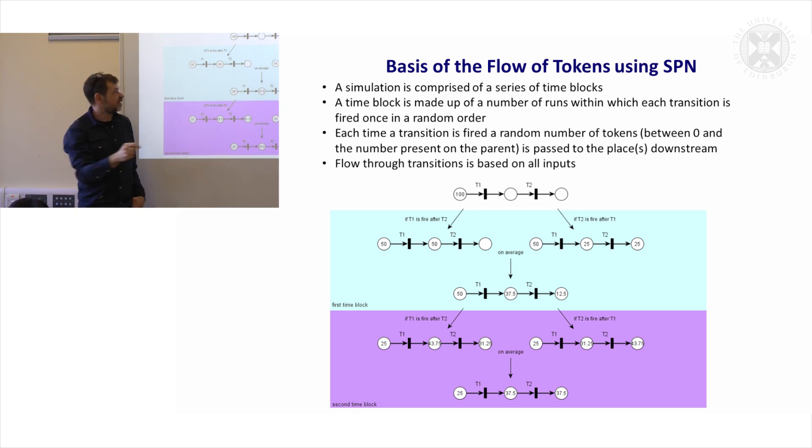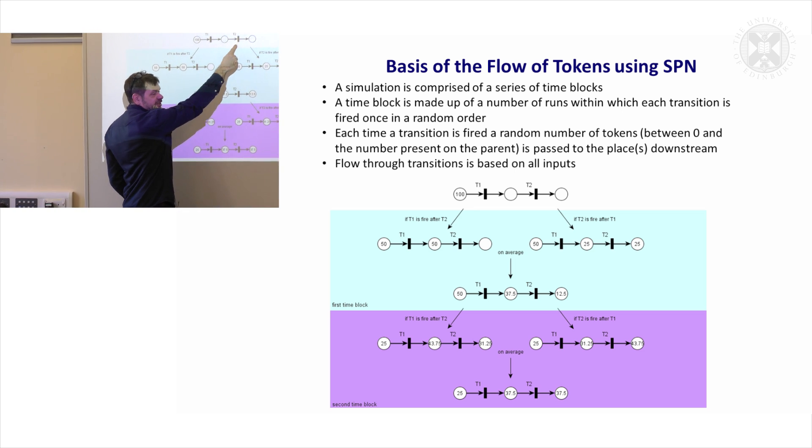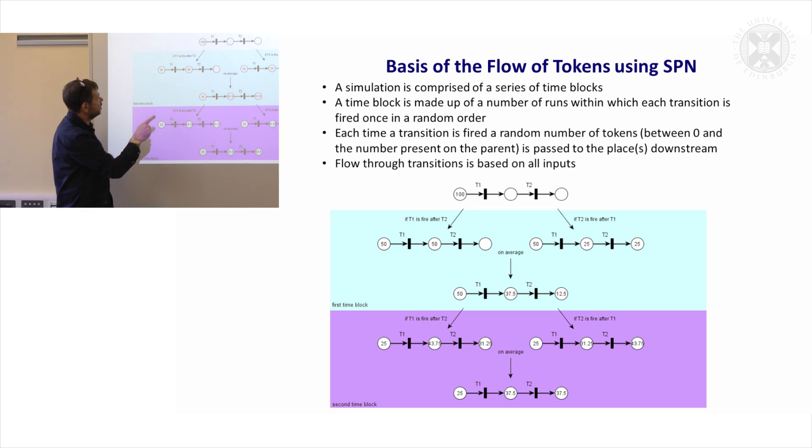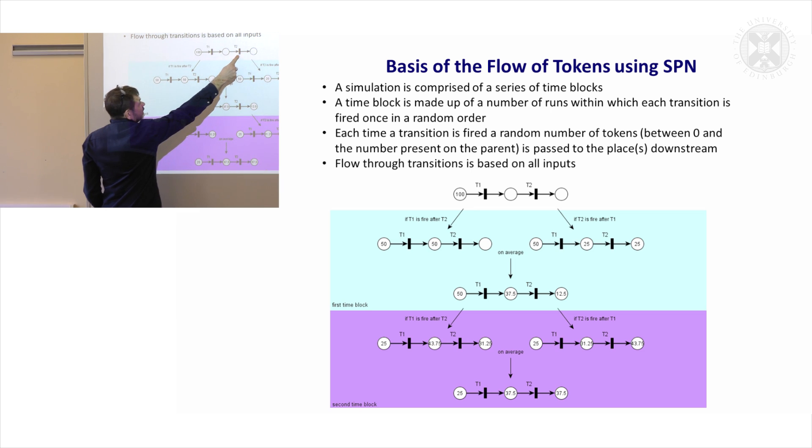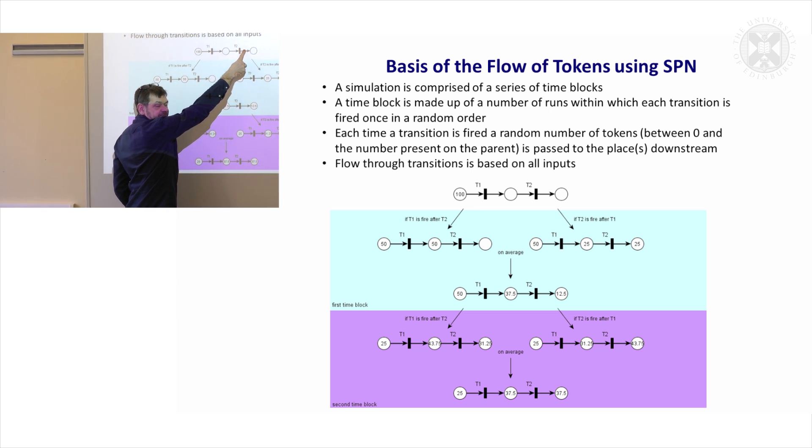Now in this scenario, there is also a second possibility, is that the order in which transitions fire is also random. So T1 could fire first, or T2 can fire first. Now why this is important is because if T2 fires first, this is fired, but of course there's no tokens there, so no tokens have moved down there.